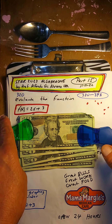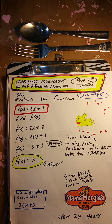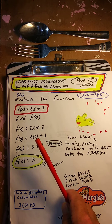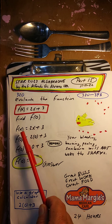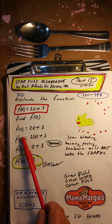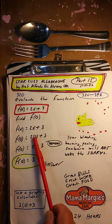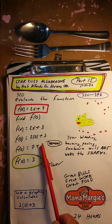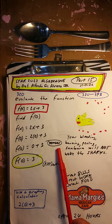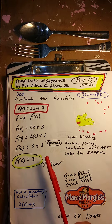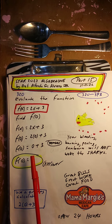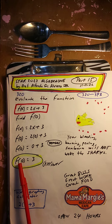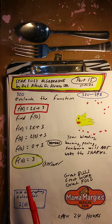Evaluate the function f of x equals 2x plus 3, find f of 0. So put a 0 in there for the x. So that means 2 times 0 is 0 plus 3. Remember PEMDAS — order of operations. So 0 plus 3 is 3, so f of 0 is 3.